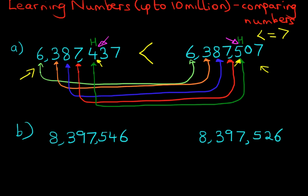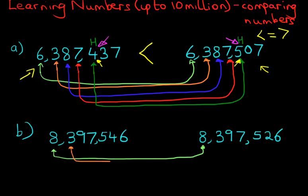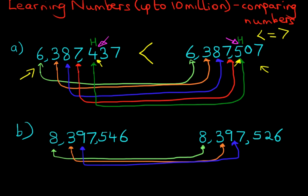Those are our two numbers. We have to work out which number is larger and which is smaller. Let's start with the digit on the left — comparing the millions. They are both 8, so exactly the same. Next, we compare the hundred thousands: we've got 3 here and 3 here — exactly the same. Moving to the ten thousands, both of them are 9. So again, we still cannot tell which number is larger and which one is smaller.